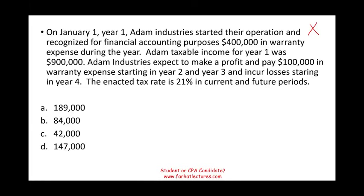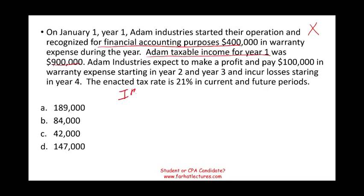On January 1st, Adam Industries started their operation and recognized for financial accounting purposes $400,000 in warranty expense during the year. Immediately, you would note that you have $400,000 of expenses recognized for financial accounting purposes — that's GAAP — so GAAP income will be lower because you recognized those expenses. Taxable income for the year was $900,000. So IRS taxable income is $900,000, which is given.